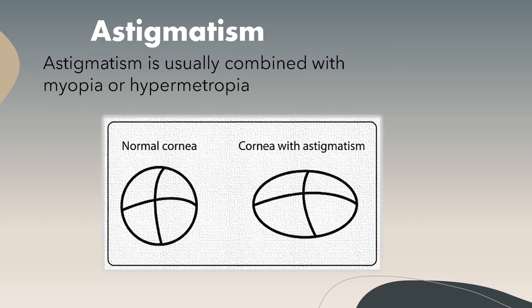Astigmatism is usually combined with myopia or hypermetropia. Instead of the cornea having a symmetrically round shape, it is shaped more like a rugby ball, with one meridian being significantly more curved than the meridian perpendicular to it. This usually causes vision to be blurred or distorted to some degree at all distances.